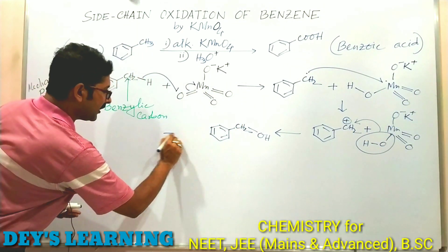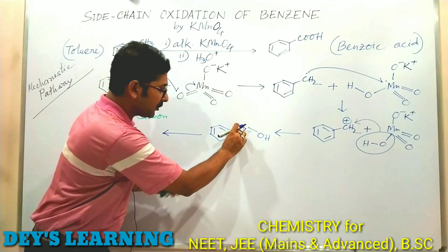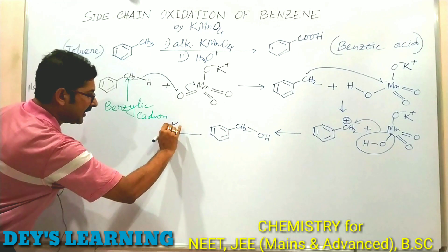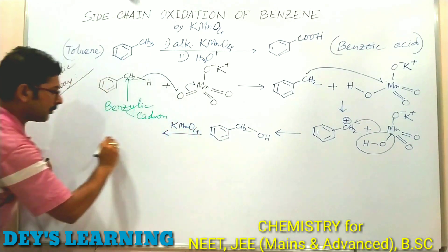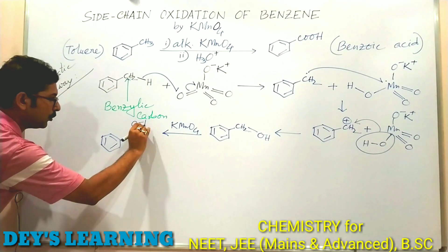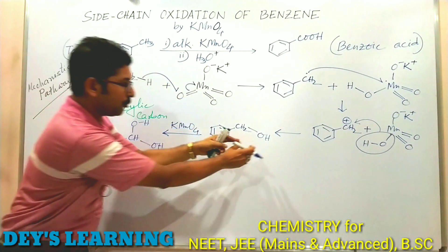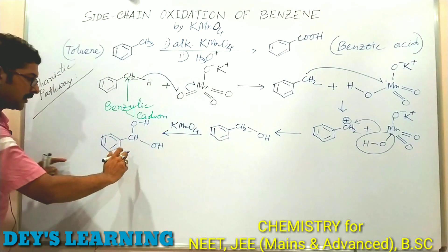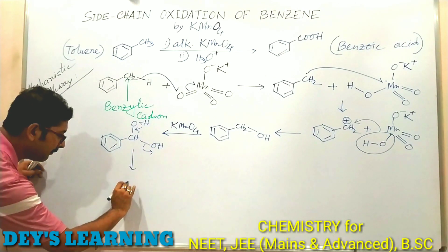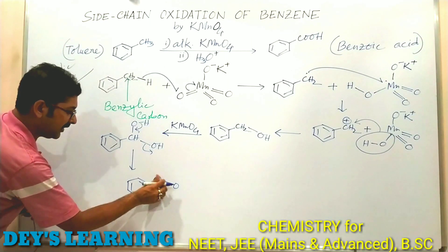The reaction proceeds in a similar manner: the C–H bond of benzyl alcohol is again fragile and is broken down by KMnO₄. This oxidation replaces one hydrogen with OH, then another hydrogen is replaced by another OH. On dehydration, this geminal diol molecule loses water and becomes benzaldehyde.